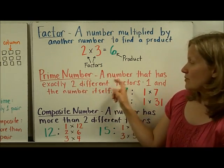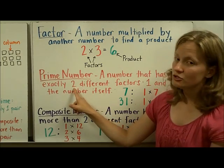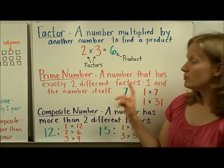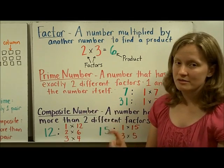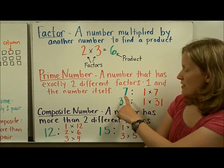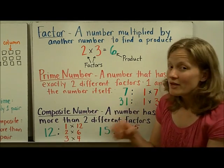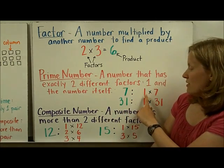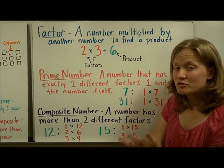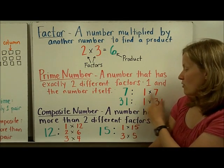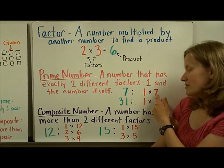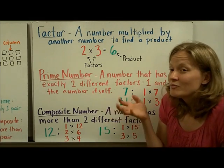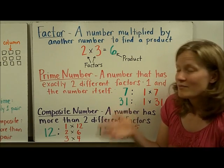So a prime number is a number that has exactly two different factors. And those two factors have to be one and the number itself. So let's look at two examples. The number seven, the only way you could arrange seven in a rectangle or in an array is one by seven or seven by one. The only factors or the numbers you can multiply together to get seven are one and seven. One times seven is seven. Seven times one is seven. There's no other way I can multiply two numbers together to get seven. It must be a prime number.